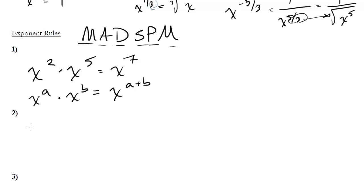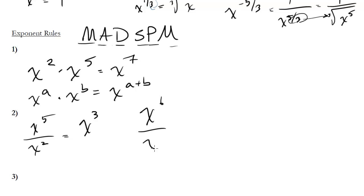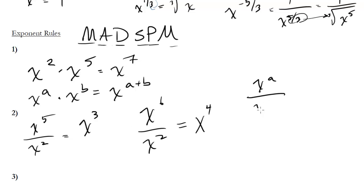How about dividing? So x to the fifth over x to the two — here you just subtract the exponents, giving x to the third. One important note: x to the sixth divided by x to the two is not x cubed. Don't divide the exponents — you subtract them, so this is x to the fourth. The general rule is x to the a divided by x to the b equals x to the a minus b.